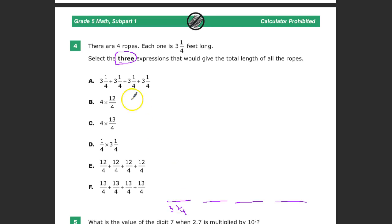So as you can see, the first choice is that I'm adding 3 1/4 four times. So I select three expressions that would give me the total length of all the ropes. I know if I had this, plus this, plus this, plus this, then I would get the total length. Because it would take me from here to here. You'll just assume these little spaces aren't in there at all. So that's certainly one that I would want to work with.